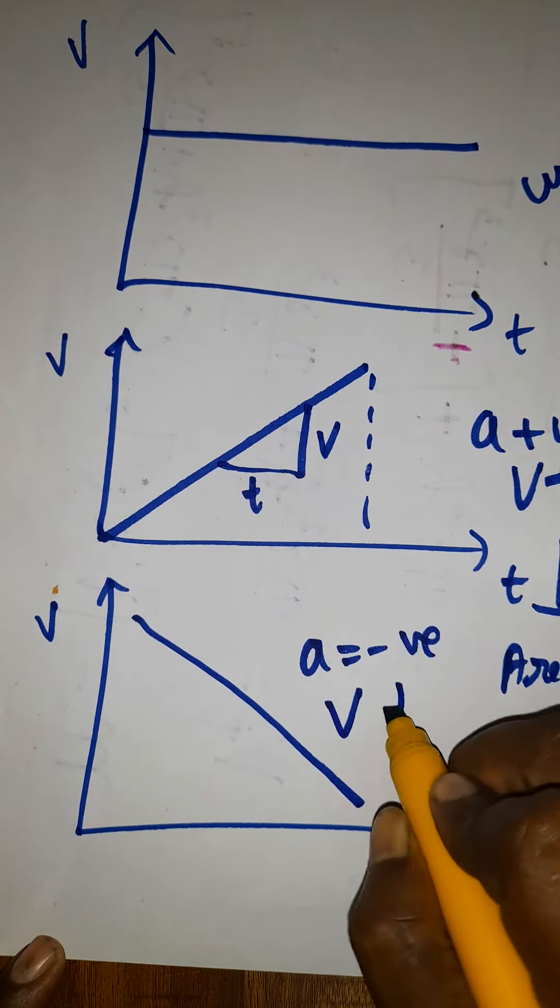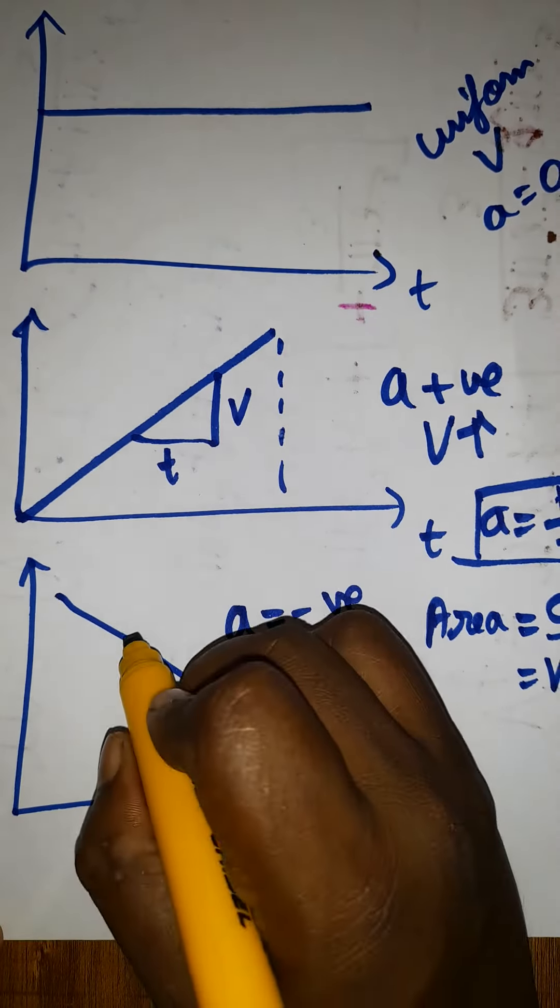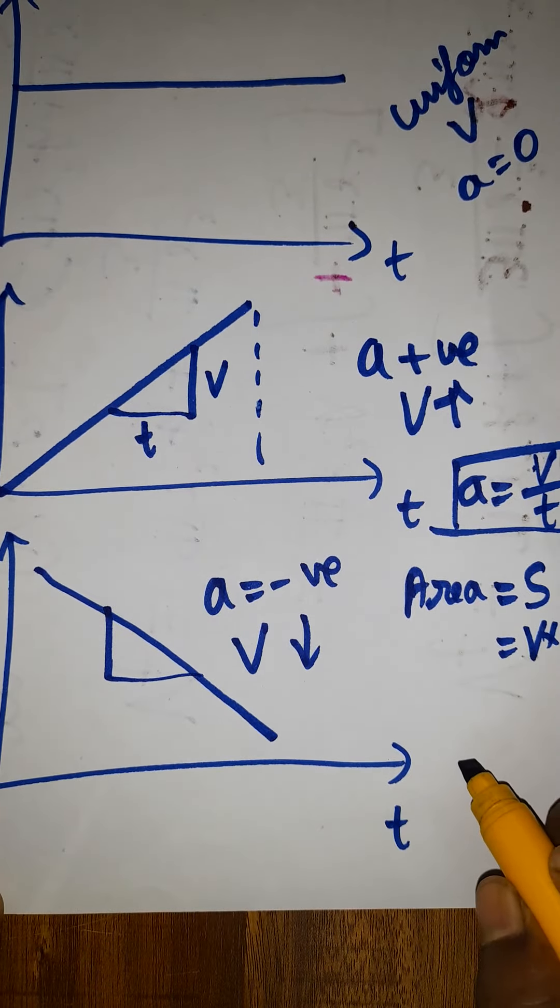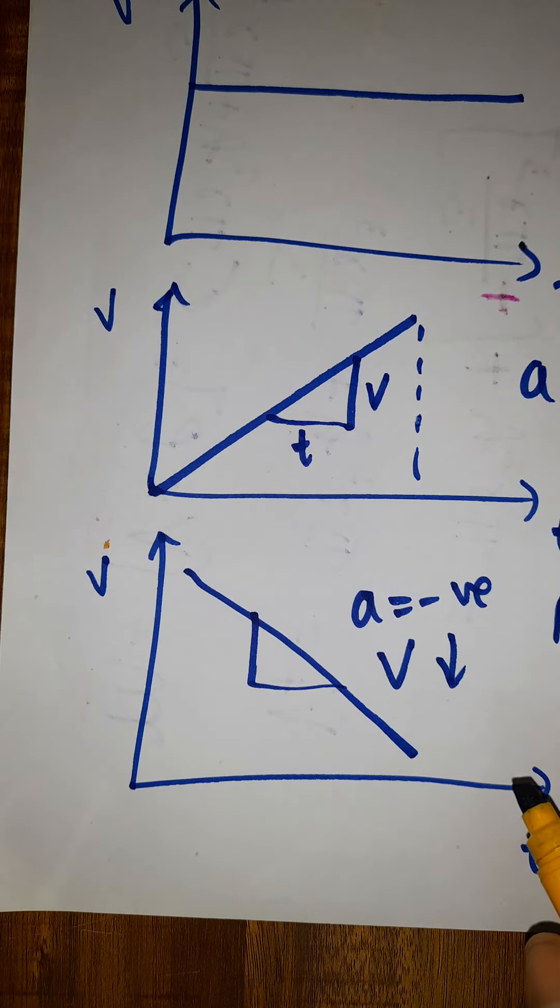Velocity decreasing with respect to time. Here also, the same: slope of the graph will indicate acceleration, and area of the graph will indicate displacement.